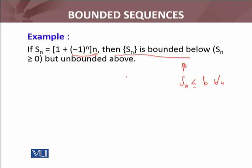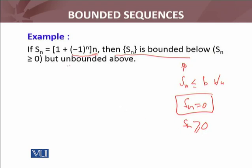When N is even, the sequence shoots towards infinity because it is multiplied by N. When N is odd, (1 + (-1)^N) gives 0, so S_N = 0. The terms of this sequence are either 0 or a positive number approaching infinity. So S_N is bounded below because all terms are greater than or equal to 0 — zero is a lower bound — but it is unbounded above.